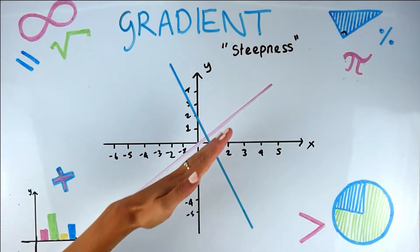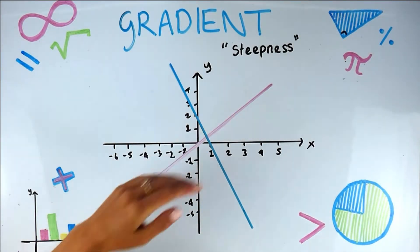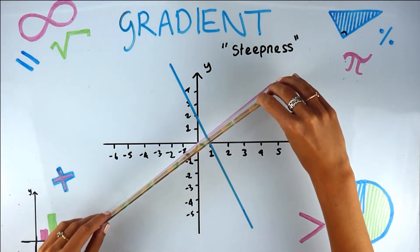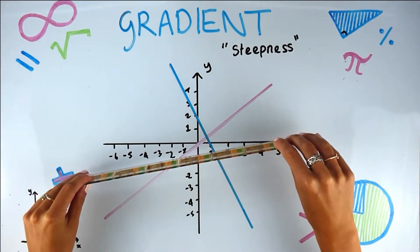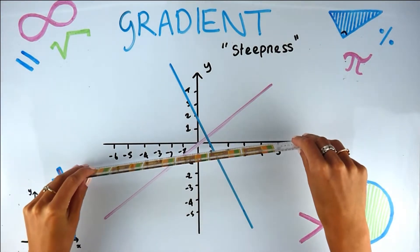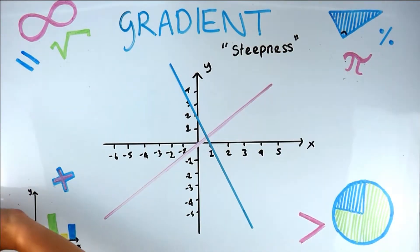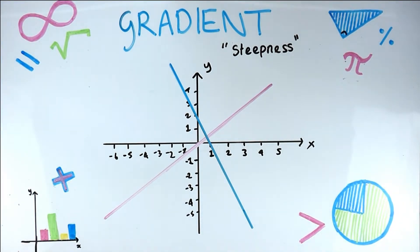A gradient is how steep a line is. If you can imagine a line that is less steep, if you were walking up that road it's not going to hurt as much — versus one that is really steep. So now we know what the gradient is, we need to know how to work it out.